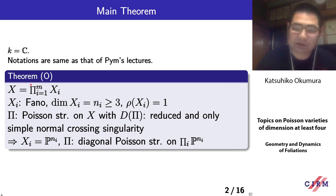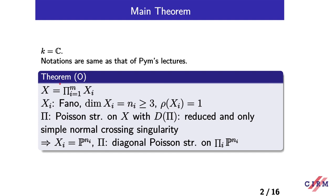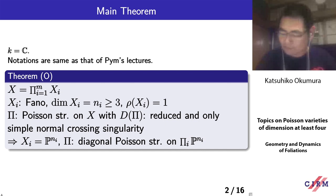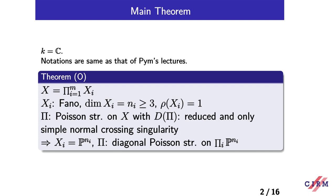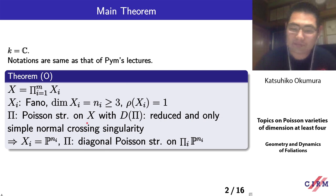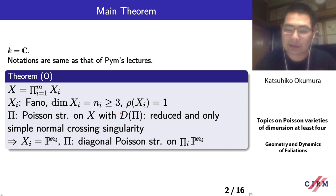This is today's main theorem. This talk claims that the theorem classifies the Poisson structures on the Fano product. Today I classify the Poisson structures of reduced and only simple normal crossing log-symplectic degeneracy divisor D_pi.